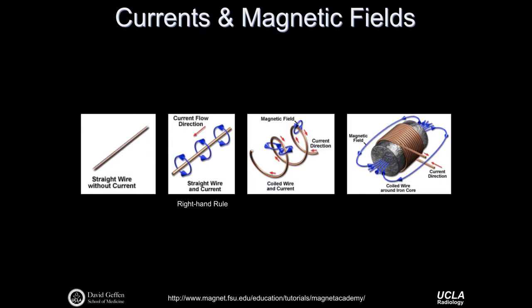The main magnetic field is actually generated using wire carrying current. A straight wire with current forms a magnetic field according to the right-hand rule. Bending that wire into a coil or solenoid generates very high magnetic fields on the inside and relatively low fields elsewhere. A conventional electromagnet may add an iron core to further concentrate field lines, but in an MRI scanner we can't use an iron core because we need to leave the bore open for patients and other objects being imaged.